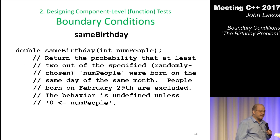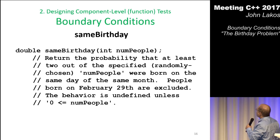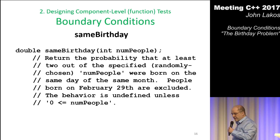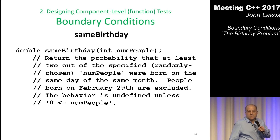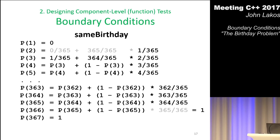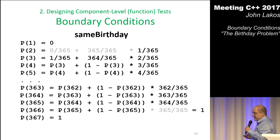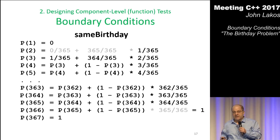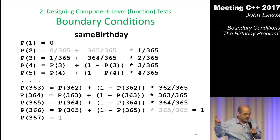What does this thing look like in the interface and what does it do? Since this isn't really an interactive opportunity, I'm just going to throw this out as an interface and contract: return the probability that at least two out of the specified, randomly chosen, num people were born on the same day of the same month; people born on February 29th are excluded; the behavior is undefined unless zero is less than or equal to num people. I'm going to give you some math up here because there's some math involved and I don't want to recalculate it up here.